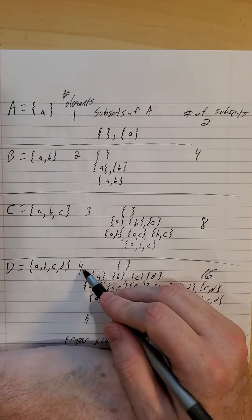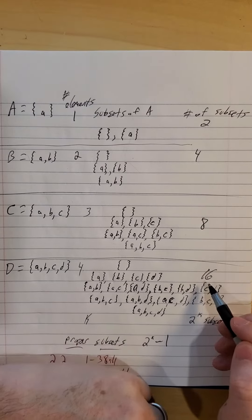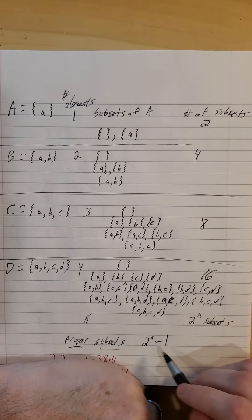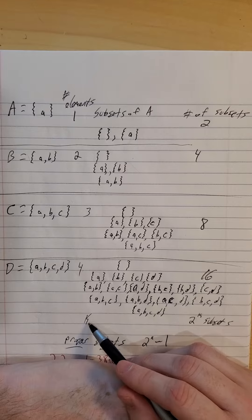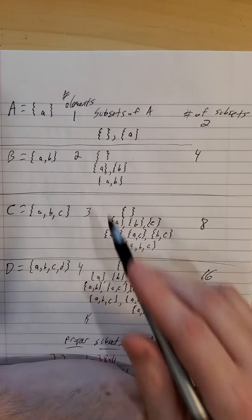So we had four elements there, 16 total subsets if you tally them up, and in general, if we have K elements, you will have two to the K power subsets.